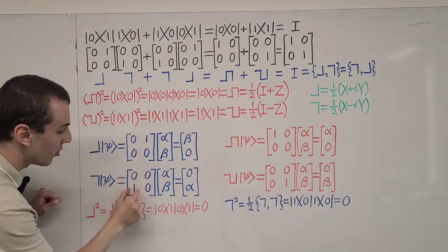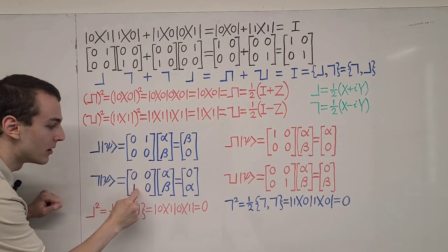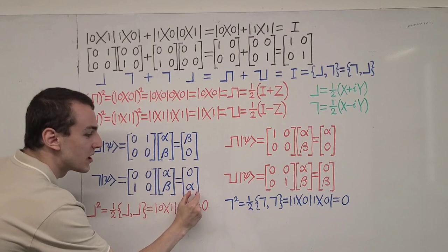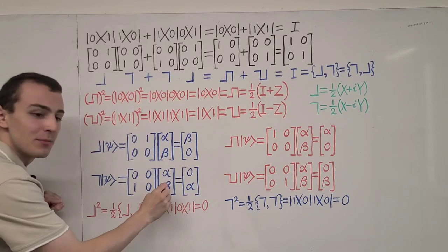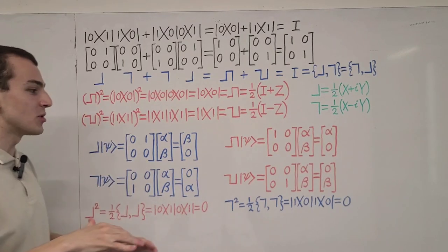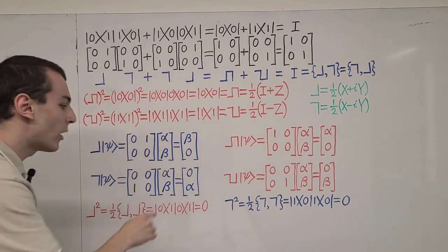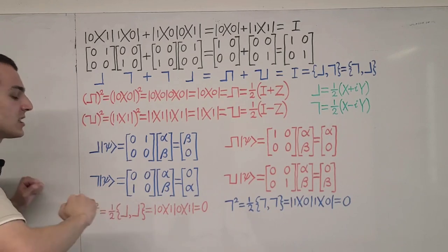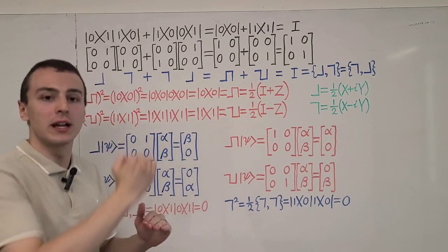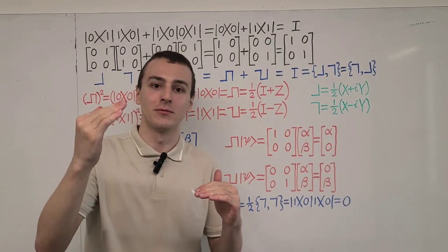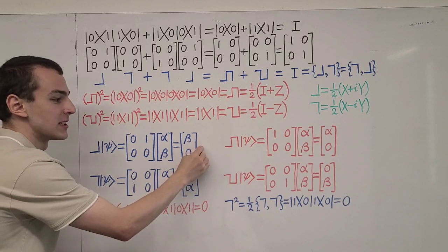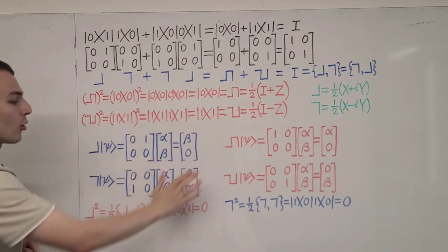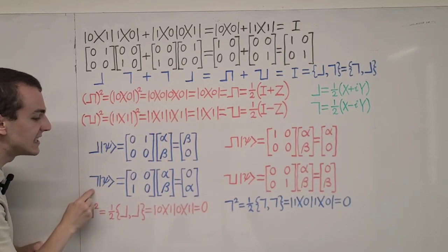And if we look at the raising operator, it is the opposite. This tells us that the ground state is being excited up to the first excited state. Alpha, the coefficient of the ground state, becomes the coefficient of the first excited state, and beta disappears. You can't keep exciting because we only have two accessible states — that is why beta disappears. This raising operator gets rid of the excited state; if you apply it again, it destroys the state. You cannot raise any further, and you also cannot lower any further than the ground state.